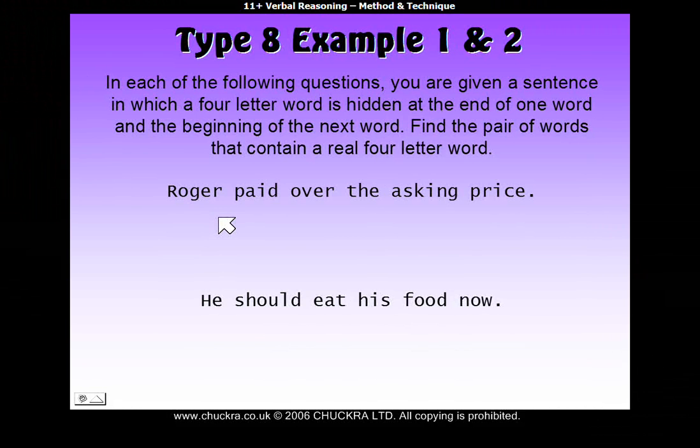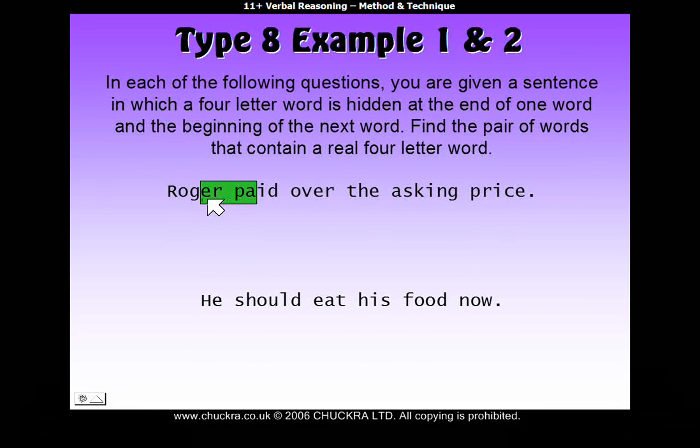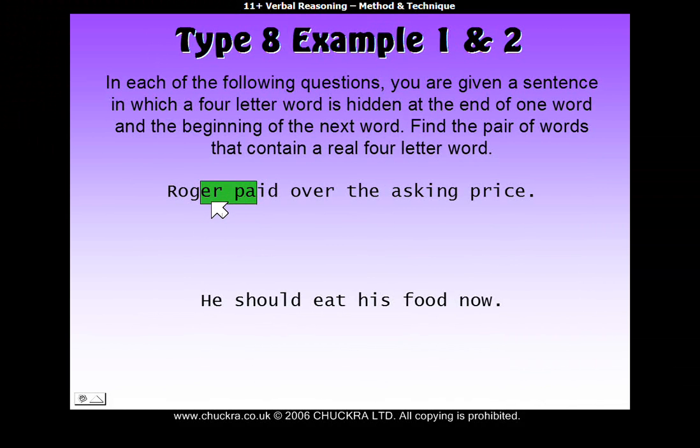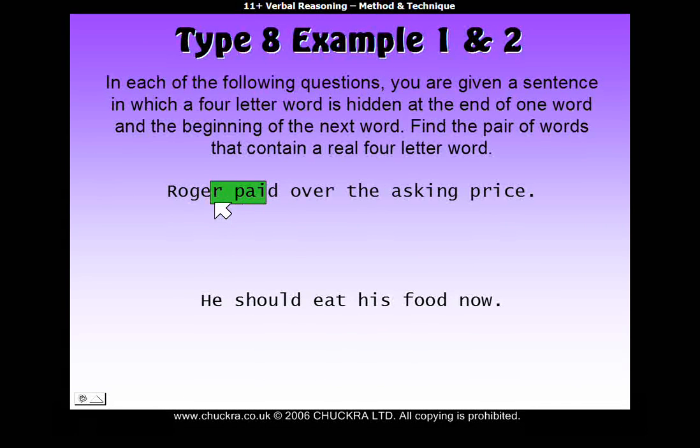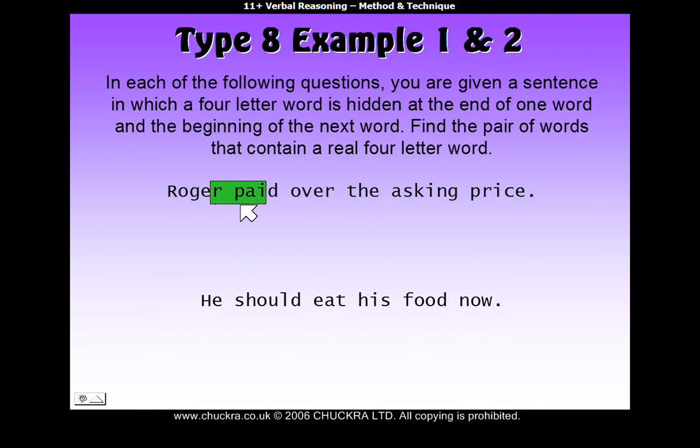The best thing to do is to just look at the sentence first and see if you can spot the hidden word, and what your eyes really should be doing is looking at the options. So for example between Roger and paid we've got the option of the four-letter word being made up of three letters from Roger, the G-E-R, the last three letters and the first letter of the next word, making 'gerk' which is not a real word. You then move on and try two letters from Roger and two from paid. So you've got E-R and P-A, so E-R-P-A, again not a real word, and then you move on and only one from Roger and three from paid which is R-P-A-I, again not a real word.